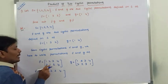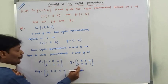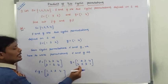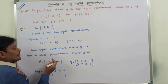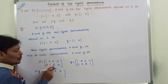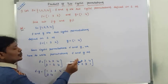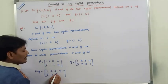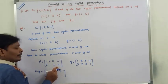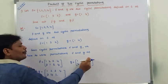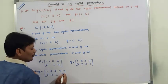Next, element 2: in F, 2's image is 1. Go to element 1 in G — 1's image is 4. Therefore, under F∘G, 2's image is 4. Next, element 3: in F, 3's image is 2. Go to element 2 in G — 2's image is 2. Therefore, 3's image is 2. Finally, element 4: in F, 4's image is 4. Go to element 4 in G — 4's image is 1. Therefore, 4's image is 1.